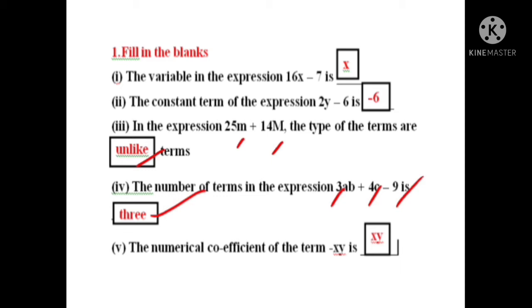The numerical coefficient of the term minus XY. What is the coefficient? XY is the variable part, and the coefficient — that is, the constant multiplied with XY — is minus 1.